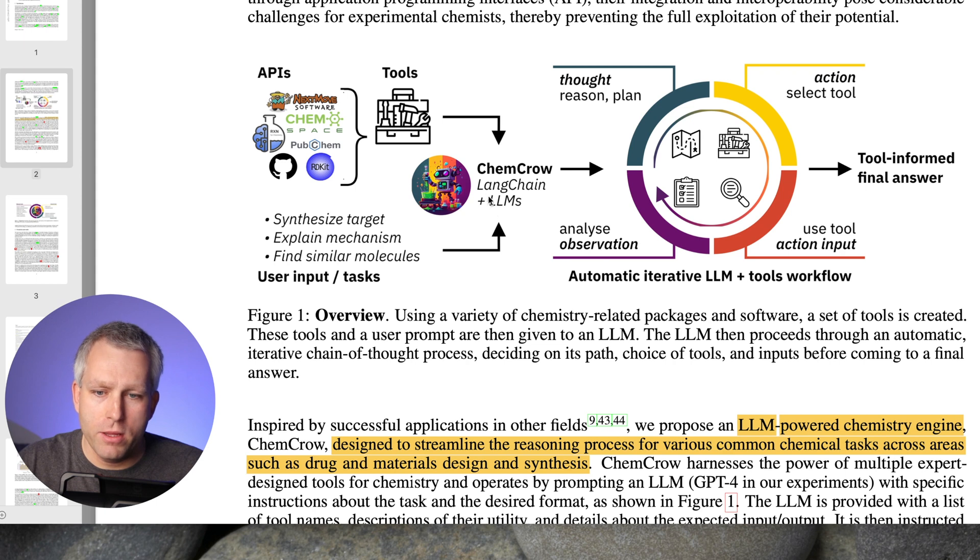ChemCrow is in the middle, which is a combination of a large language model, which would be GPT-4 in this case, but this could be any large language model like Llama from Meta or any open source language model in the future, and LangChain, which is a large language model application framework.